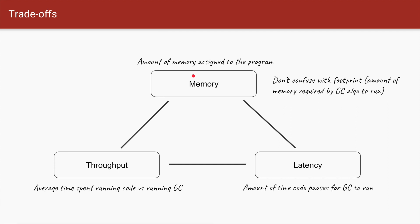The second thing we need to understand is throughput — how much time your code is running compared to how much time your garbage collection is running. For example, if the throughput is 99%, that means 99% of the time your code was running and 1% of the time garbage collection was running. Ideally you want throughput as high as possible.